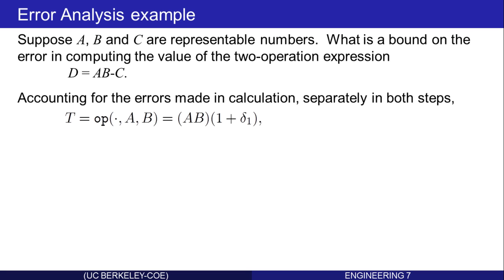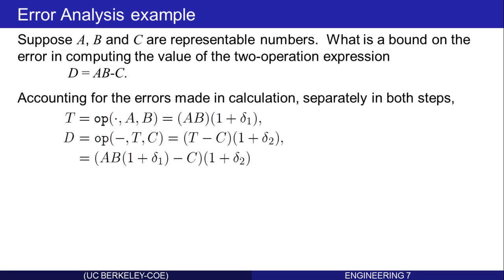The next operation is a*b minus c, so c is subtracted from the quantity t. Again, a small relative error is made in that calculation as well. Combining these and substituting for t yields this result. The computed result involves a small relative error in the product, and then another small relative error in the subtraction.